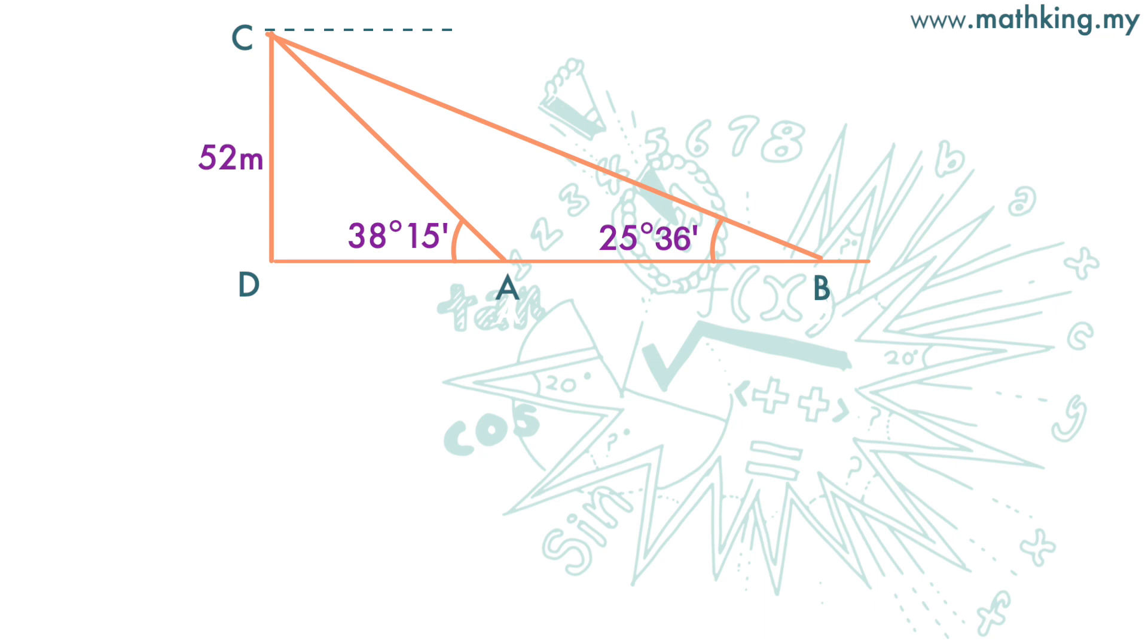We want to find the distance AB. AB is also DB minus DA. We are using DB minus DA because we can find the values of DB and DA using trigonometric ratios, but we can't find the value of AB using the trigonometric ratio directly.